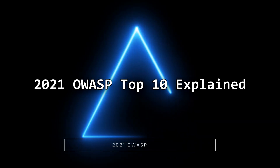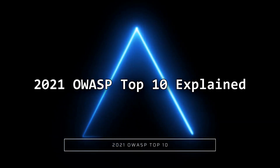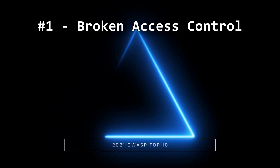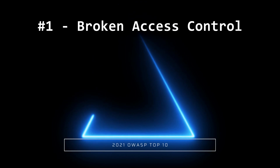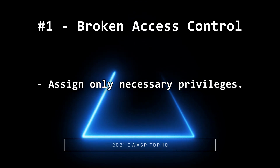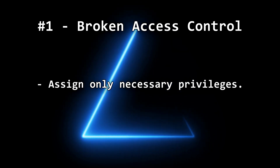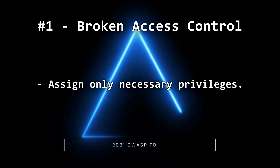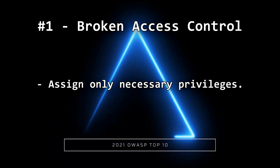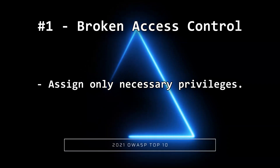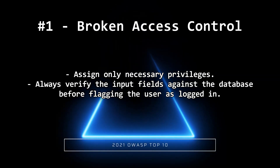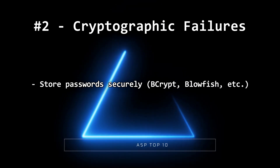Today we're walking you through the OWASP Top 10 in the database world. In first place we have broken access control. To prevent such attacks, ensure that all existing accounts within your database use only the privileges that are required to perform their actions, and avoid granting unnecessary privileges.